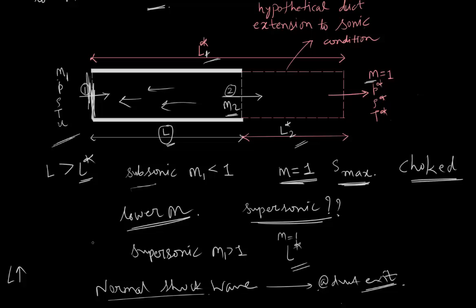As for the mass flow rate: since supersonic flow is already choked, the mass flow rate remains constant when the duct length is increased beyond L* in the supersonic case.